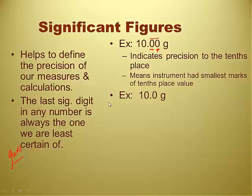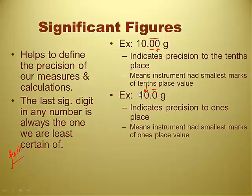10.0 grams tells me something a little bit different. 10.0 grams tells me that this place value was my guess, so that's the tenths place value. So this balance actually costs less money, probably, because it's not as precise as the first one. It only goes to the ones place. It indicates precision to the ones place. So we are sure at this place value here. It means the instrument had its smallest markings in the ones place value.